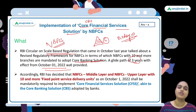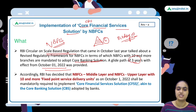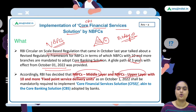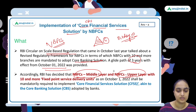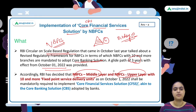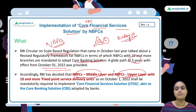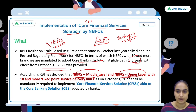The recent notification says RBI has decided that NBFC middle layer and NBFC upper layer must implement CFSS. Middle layer NBFCs include all deposit-taking NBFCs irrespective of asset size, and non-deposit taking NBFCs with more than 1,000 crore worth of assets. The NBFC upper layer refers to the top 10 asset-size-based NBFCs with enhanced regulatory requirements.